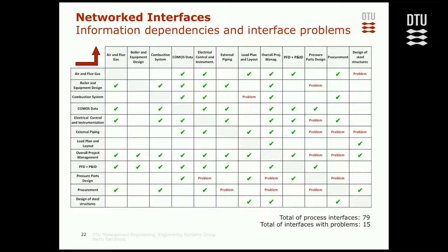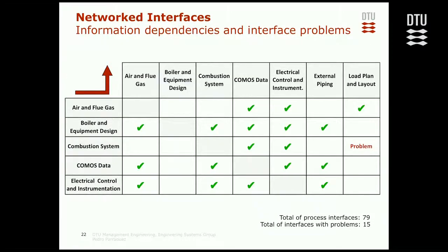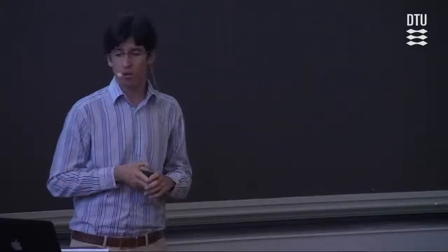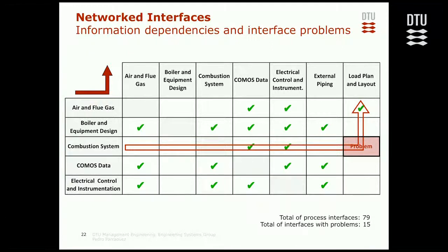To start the analysis of interfaces, we start with the technical part and map information dependencies in a matrix. In this matrix, the checks are information dependencies that were detected, and where it says 'problem' are areas that had some sort of issue during development. If we zoom in, we can read it as, for example: electrical control instrumentation has to provide information to COMOS data, or in other terms, COMOS data requires information from electrical control instrumentation. On the other side, a problem was identified — similarly, the combustion system needs to send information to load plane and layout, and in that process something happened that was reported as something that could be done better.